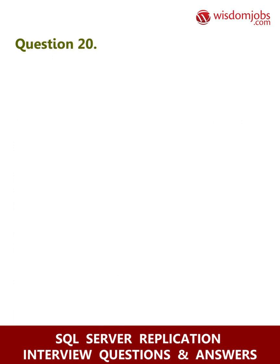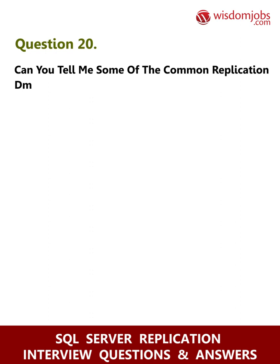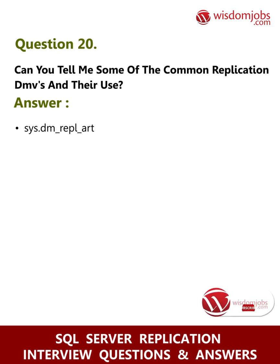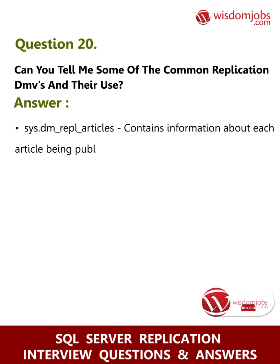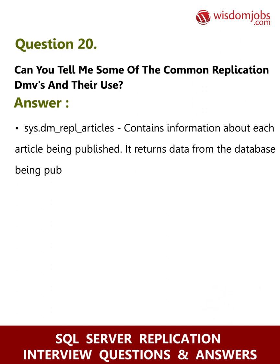Adding a user to the replmonitor role allows that user to view replication activity in Replication Monitor; however, the user cannot administer replication. Question 20: Can you tell me some of the common replication DMVs and their use? Answer: sys.dm_repl_articles contains information about each article being published. It returns data from the database being published and returns a row for each object being published in each article.